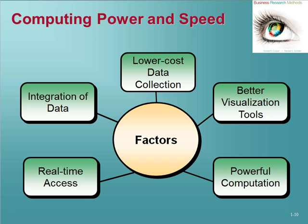We also have more powerful computation now — we can process reams and reams of data, do data mining, and find out a lot of information that may help make business decisions. We have real-time access as well: as people are purchasing things, we can get that data and information immediately. And we have integration of data, so we can get data from someone's activities online, pair it with what we know about the person from other places they've been online, compare all that, and start to build a profile of a particular customer.